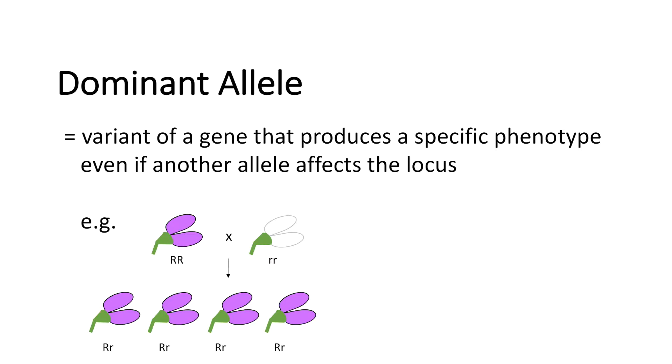The little r, little r encoded for white flower color. And we could see that the offspring, which is all heterozygous, is purple.